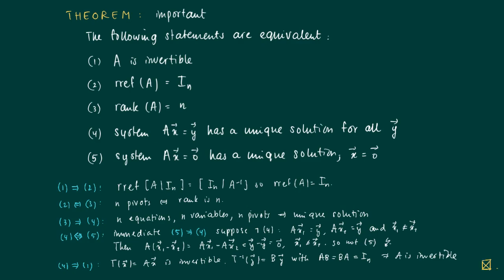So again, we started with statement 1. From 1 follows 2, from 2 follows 3, from 3 follows 4, 4 and 5 are equivalent, and from 4 we get back at 1. So we get a circular reasoning showing that all of these statements are equivalent.